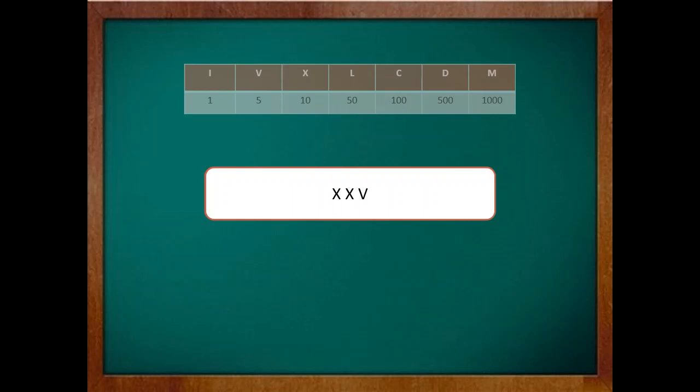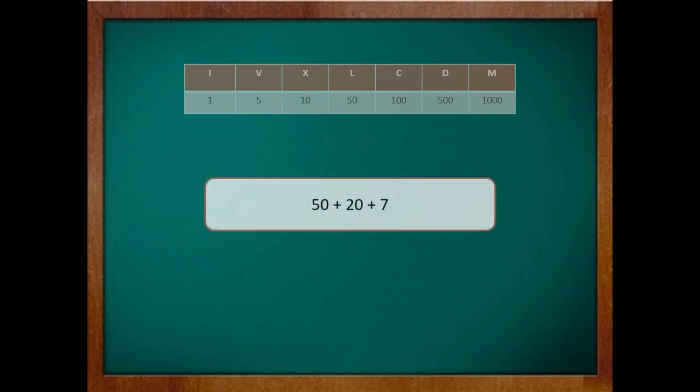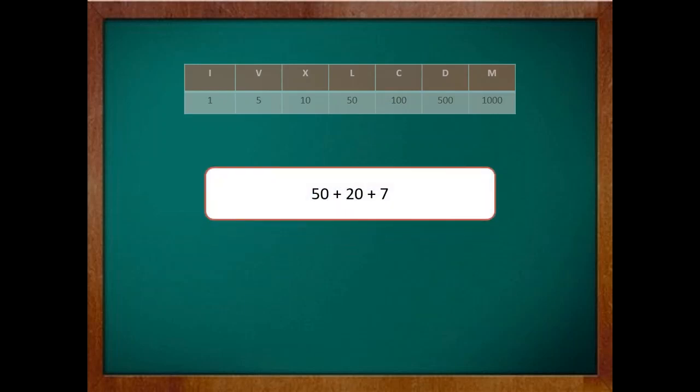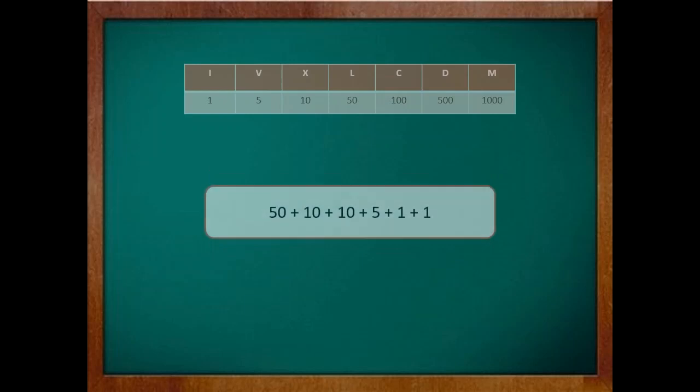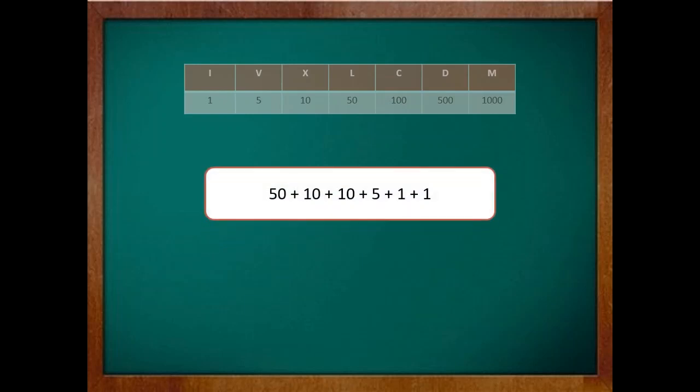Let's take another example, 77. First thing we have to do is write 77 in the expanded form which is 70 plus 7. Since both 70 and 7 do not have any Roman symbol corresponding to them, let's further break them down. So it becomes 50 plus 20 plus 5 plus 2. We'll further break it down for the same reason we discussed before, that is there are no Roman symbols corresponding to 20 and 2.